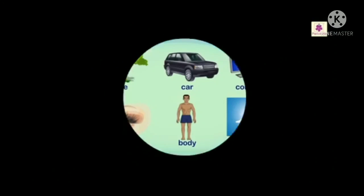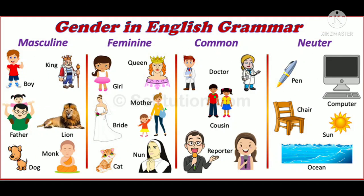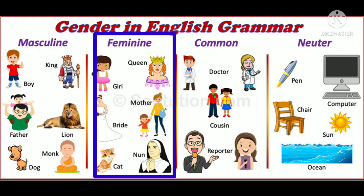We will see a few more examples, children. Masculine gender: king, boy, father, lion, monk, and dog.